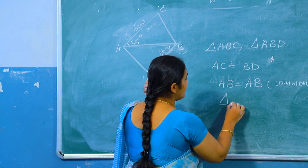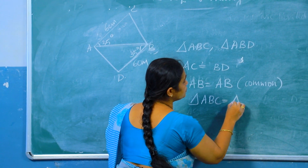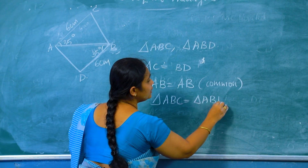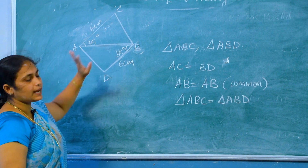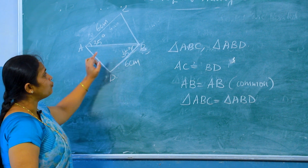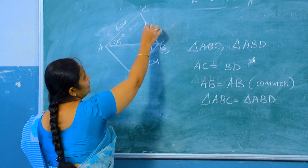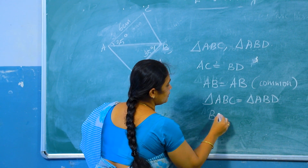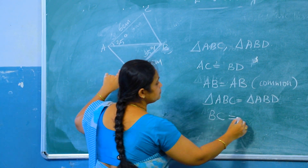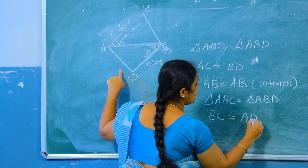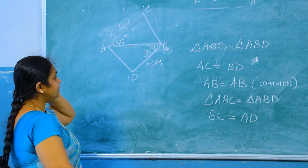That is, triangle ABC equal to triangle ABD. Therefore, these two triangles are congruent triangles. Therefore, the third sides must be equal. The third side: BC equal to AD.